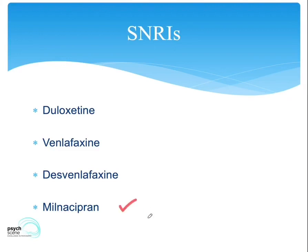Milnacipran is also an agent that is evidence-based in fibromyalgia. It has a significantly higher noradrenergic action than the other SNRIs, and hence can be used in pain conditions such as fibromyalgia. Fibromyalgia does have noradrenergic pathways involved in its pathogenesis.